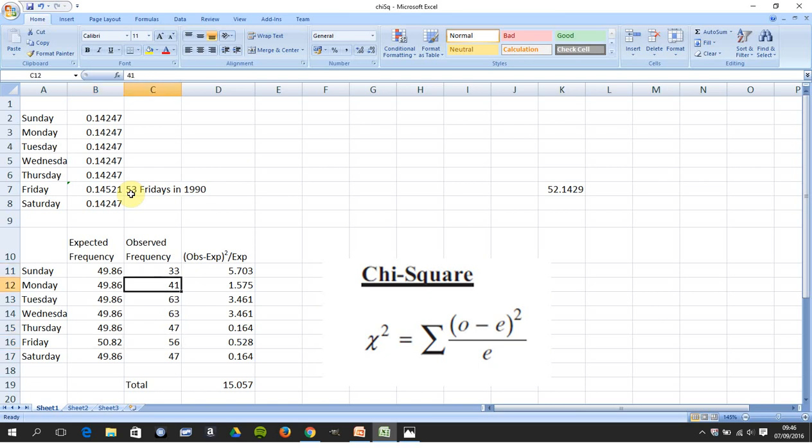The observed values are given and then we start to do a little bit of work. So the chi-squared is the observed minus the expected, all to be squared, divided by the expected. So the observed is 33, the expected is 49.86. So on your calculator you would say 33 minus 49.86, all to be squared, divided by the expected.